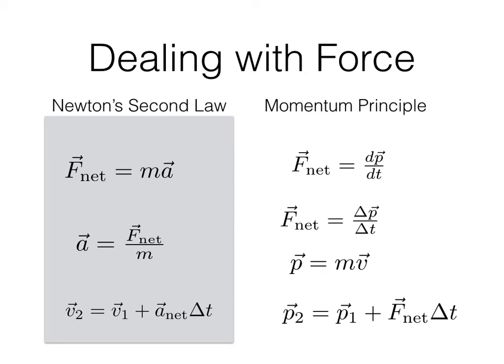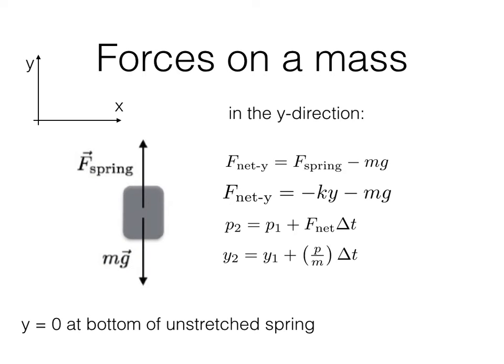Those are the two basic ideas — we're just adding another step in a numerical calculation. Here's my spring. I have two forces on it: the spring's pulling up, gravity's pulling down. I can deal with this just in the y-direction. So in the y-direction, F-spring is pulling up and gravity is pulling down. If I take the equilibrium position to be at y equals zero, then the force is just k times the y position. So this is my net force F-net-y — if I know the y position, I can calculate the force.